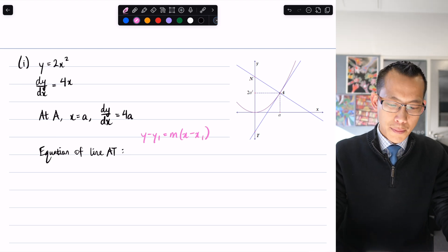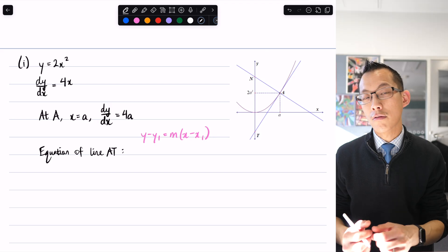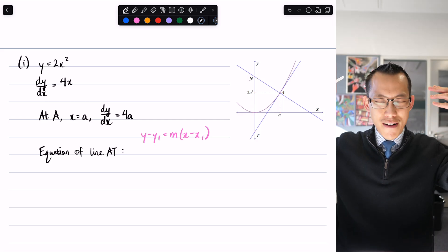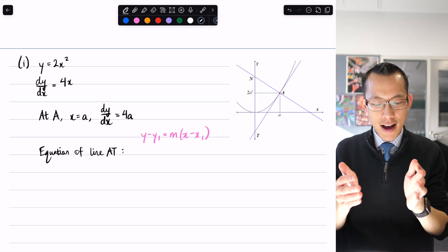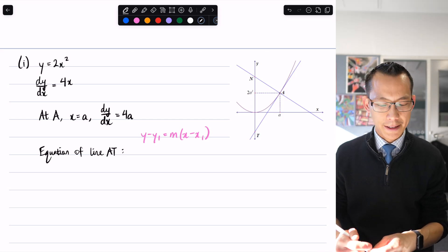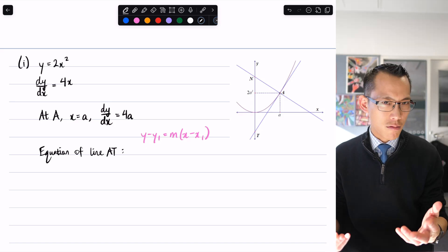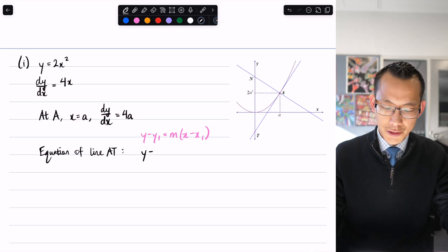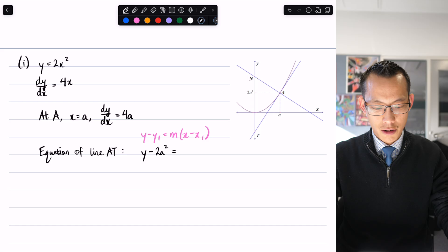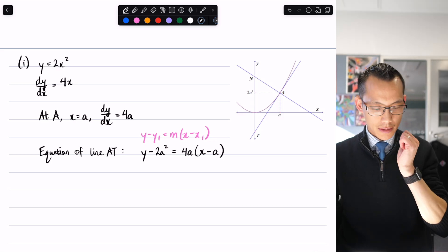Writing this line doesn't get me marks, but it frees up my brain space so I can input the relevant terms. If you feel really comfortable, you don't need to write y - y₁. Now let's put in the information: y - 2a² = 4a(x - a). The y-coordinate is 2a², the gradient is 4a, and the x-coordinate is a.